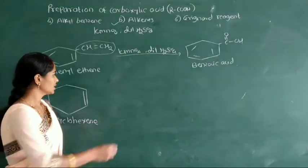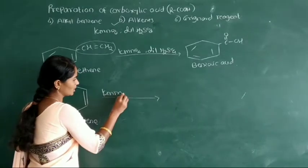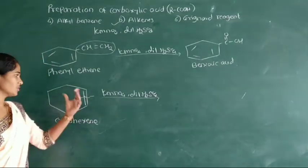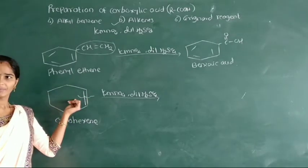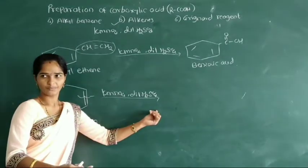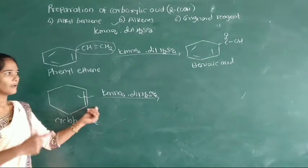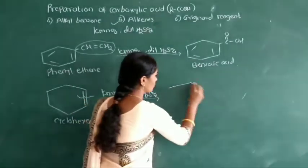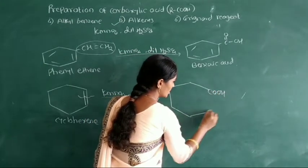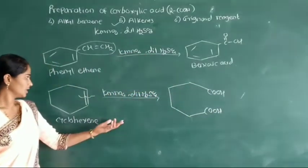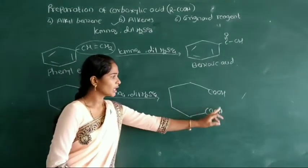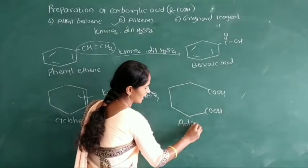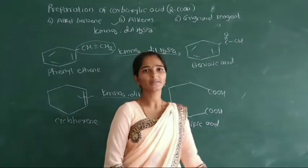This cyclohexene reacts with oxidizing agent KMnO4 in the presence of dilute H2SO4, causing breaking of this carbon-carbon double bond. In this compound, double bond is present in the cyclic ring. This cyclic ring reacts with oxidizing agent, here breaking of the carbon double bond occurs, and formation of a dicarboxylic acid at both ends of the broken carbon-carbon double bond. The name of this dicarboxylic acid is adipic acid.